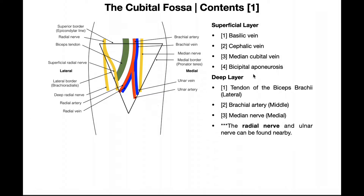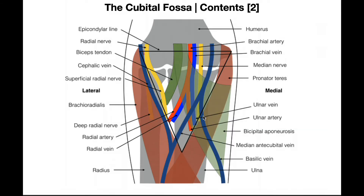That was the deep layer. Now let's take a look at the superficial layer. We're looking for the basilic vein, the cephalic vein, the median cubital vein — which has some interesting genetic variation — and also the bicipital aponeurosis, which is a second tendon-like structure coming off of the biceps brachii.